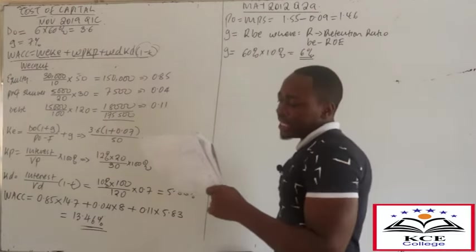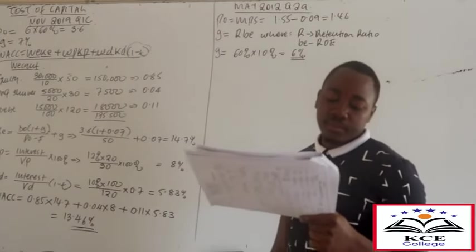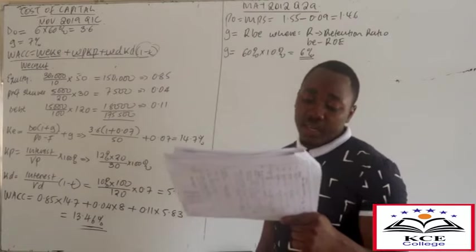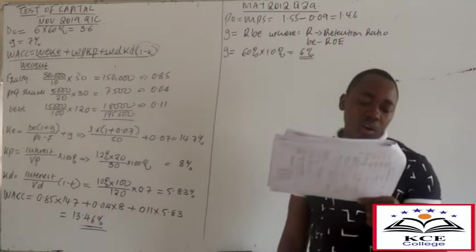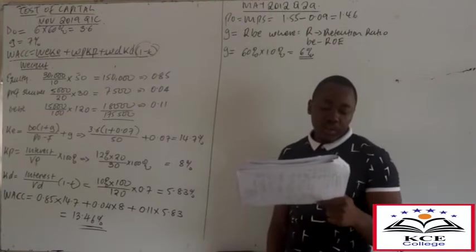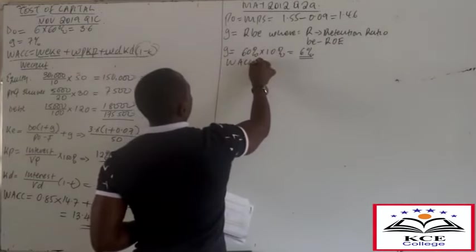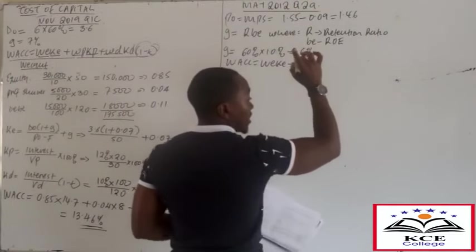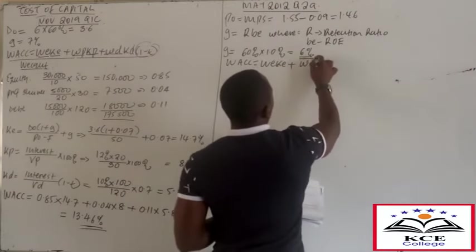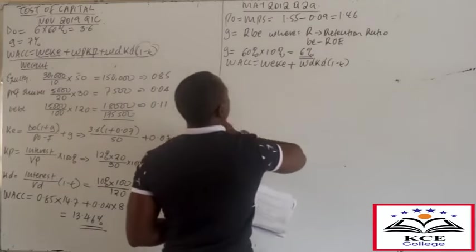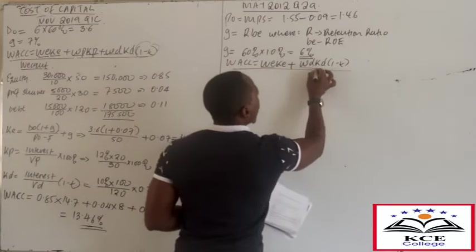The company also has 13% shilling 100 redeemable debentures with a nominal value of 7 million, currently trading at 105. The debentures are due to be redeemed at par in five years. Corporate tax rate is 30%. Required: WACC (10 marks).